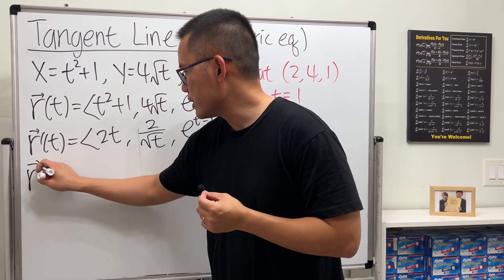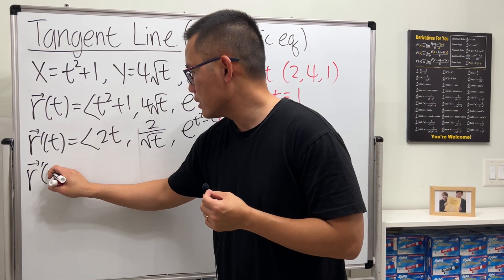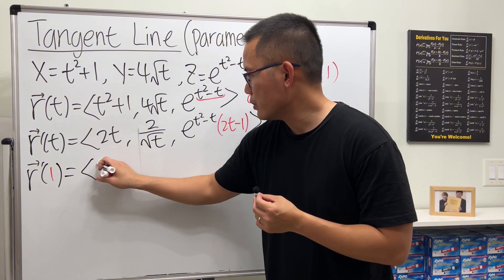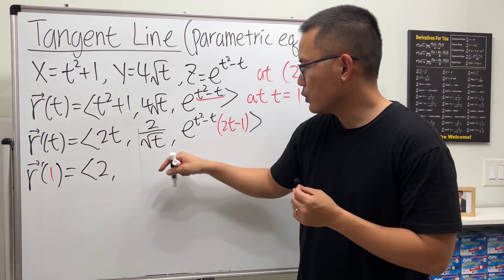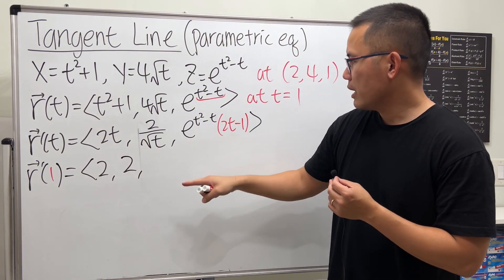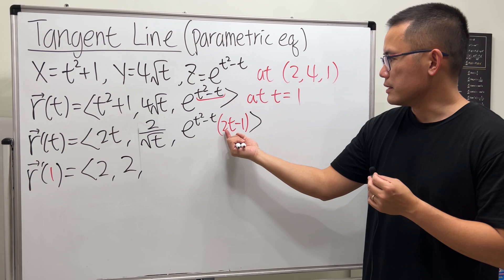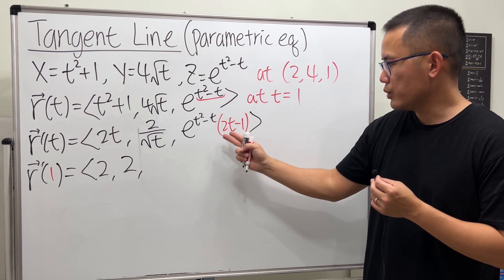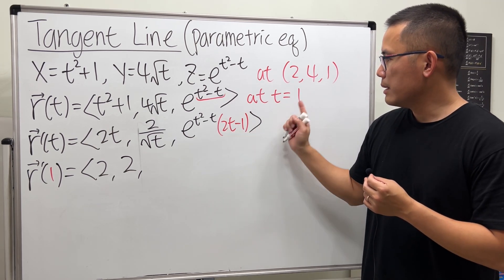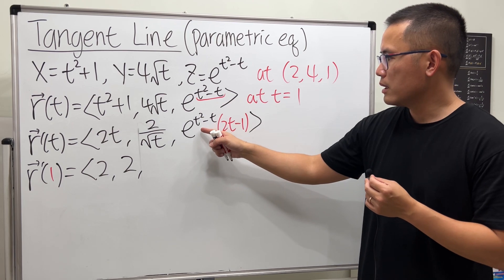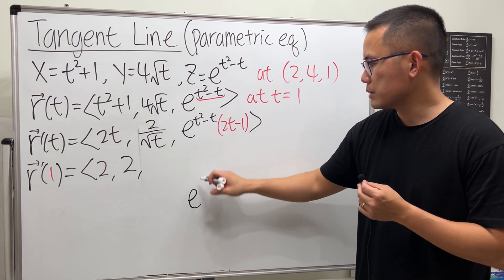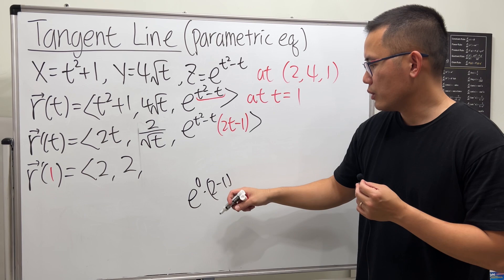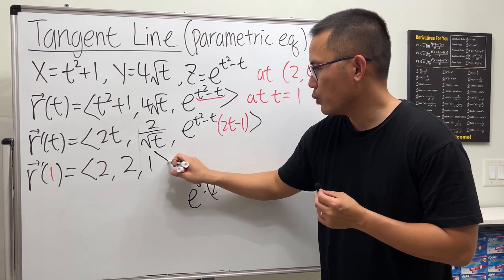Now evaluate the derivative at T equals 1. Plugging in 1 to the X component gives 2. Plugging in 1 to the Y component gives 2. For the Z component, 2 times 1 is 2 minus 1, which is 1; and e to the 0 times (2 minus 1) is also 1. So R prime of 1 is the vector ⟨2, 2, 1⟩.